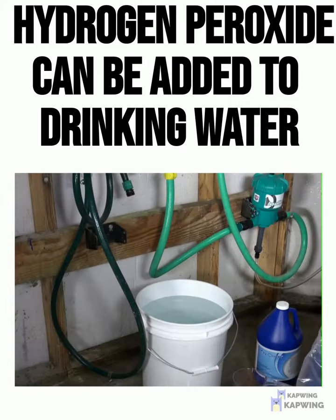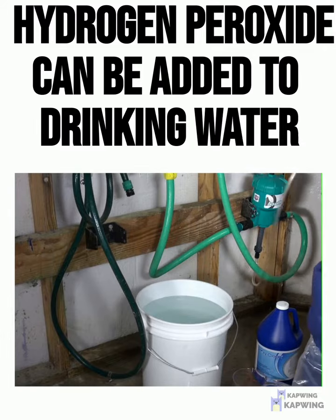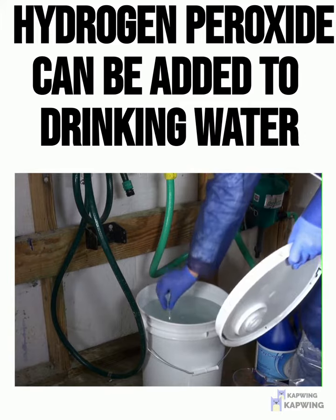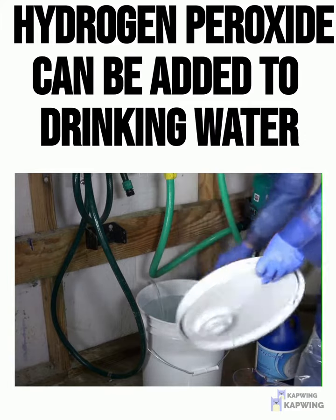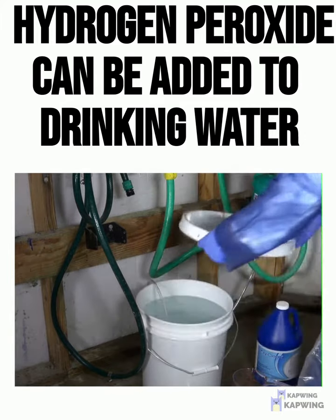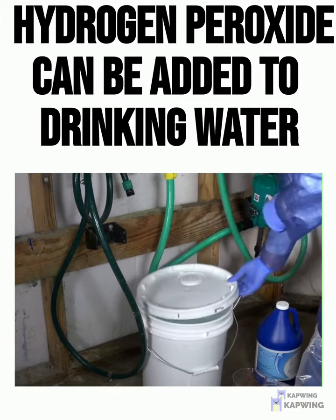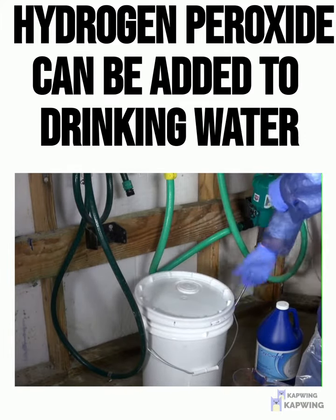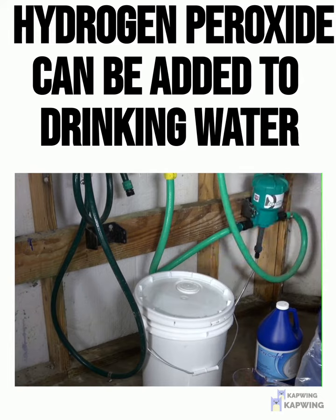After you've added 5 gallons of water to the 8 ounces of ProxyClean in your medicator bucket, drop your medicator hose into the bucket, put your lid on, and now you're ready to include your medicator into the system.